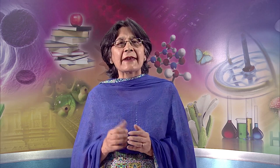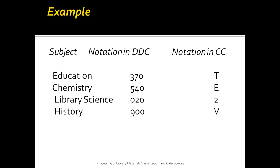Let us take a look at one example. In the subject of education, the notation in the Dewey Decimal Classification is 370, and the notation in the Colon Classification is T. In chemistry, notation in DDC is 540 and in Colon Classification is E. In the subject of library science, in DDC notation is 020 and in CC it is 2. Lastly, in the subject of history, notation in DDC is 900 whereas notation in CC is V.